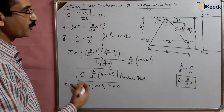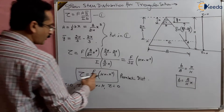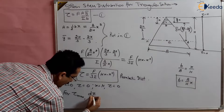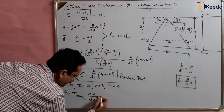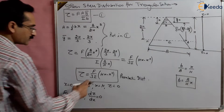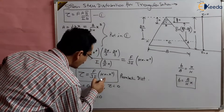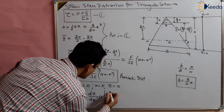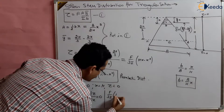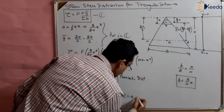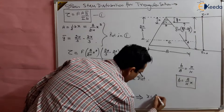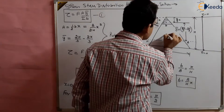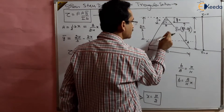To find tau max, we set dτ/dx = 0. Differentiating tau = (F/3I)(Hx − x²), we get dτ/dx = (F/3I)(H − 2x) = 0, which gives x = H/2. So shear stress is maximum at x = H/2 — at the center of the triangle height, not at the neutral axis.